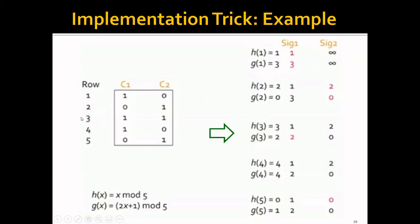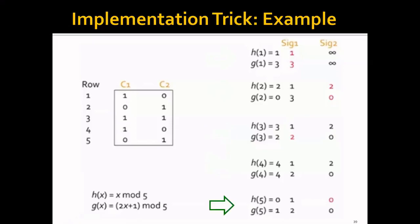For the third row, we hash the original row index 3 into 3 and 2. We go back to check C1 and C2, and this time both C1 and C2 have a 1. That means we potentially need to update both signatures. For C1, 3 is larger than 1 so we don't update that entry, but 2 is smaller than 3 so we update that entry to 2. For the signature of C2, since 3 and 2 is not smaller than 2 and 0, we don't need to do anything. We then perform similar steps for the fourth and fifth rows to get the final signature.